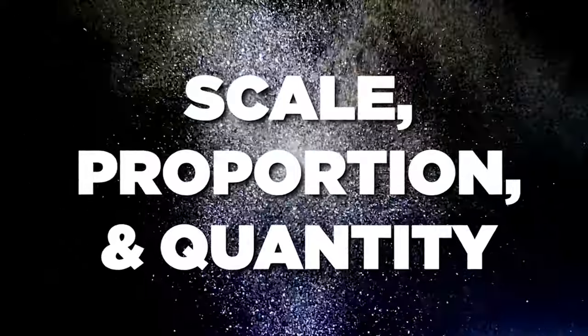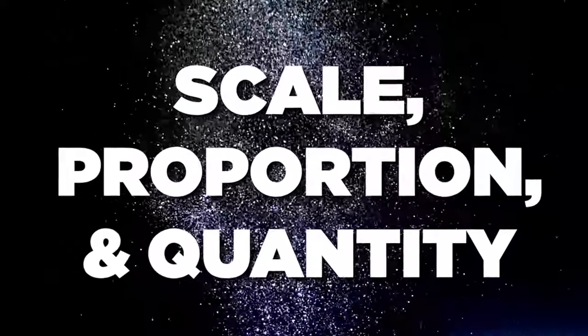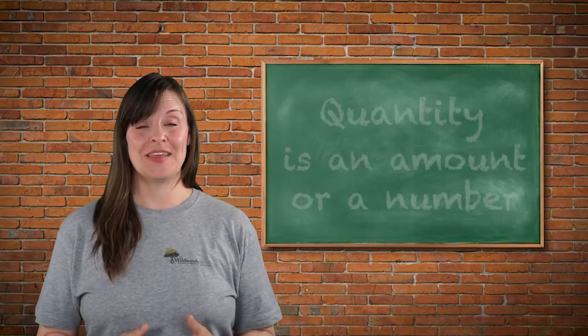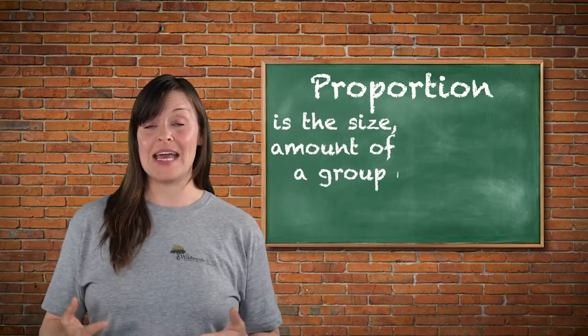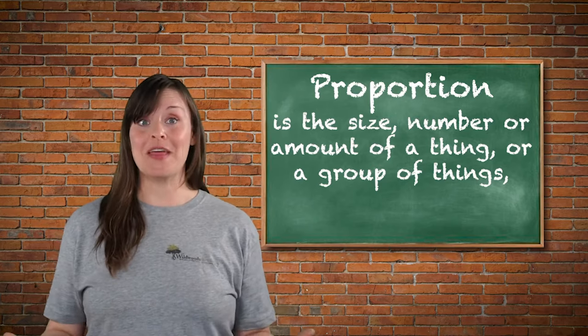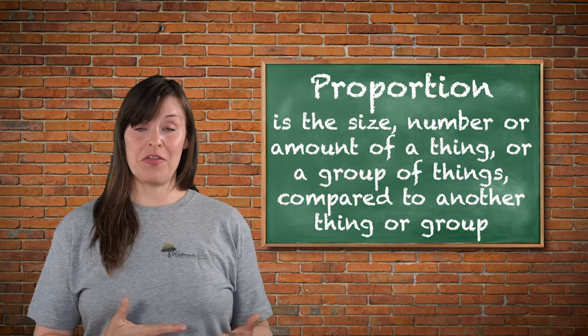Today we're talking about scale, proportion and quantity. Quantity is an amount or number. Proportion is the size, number or amount of a thing or a group of things compared to another thing or group.